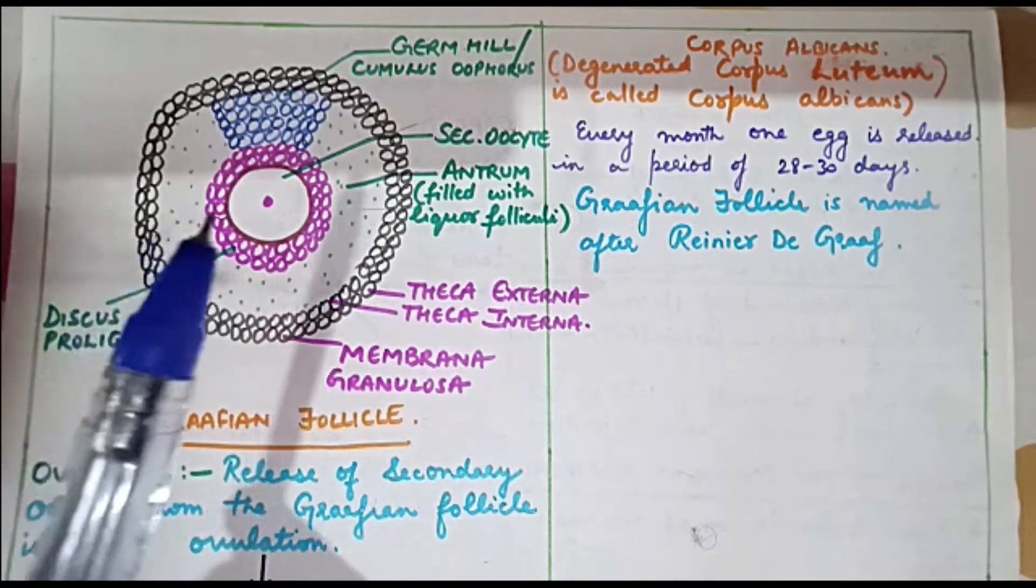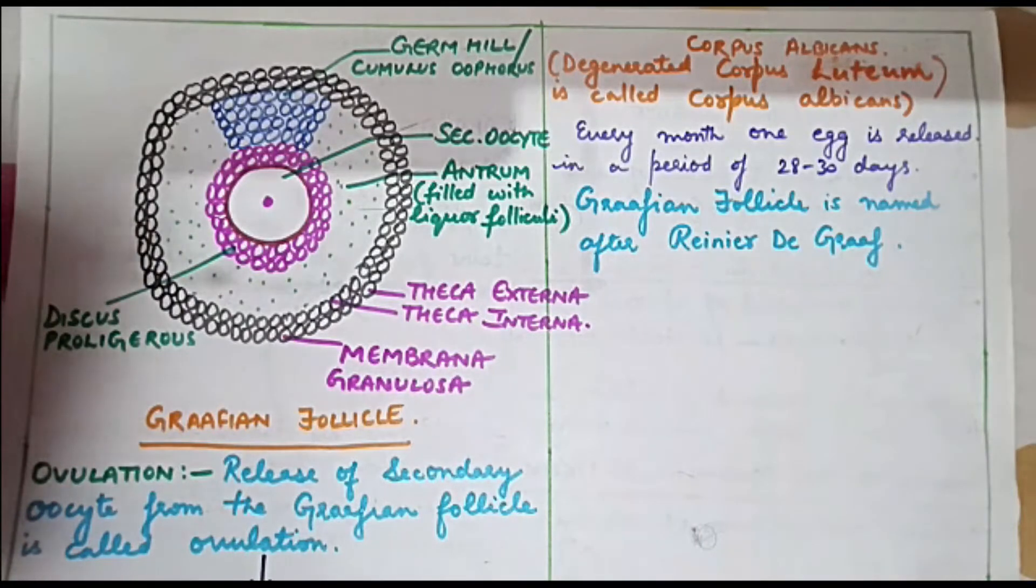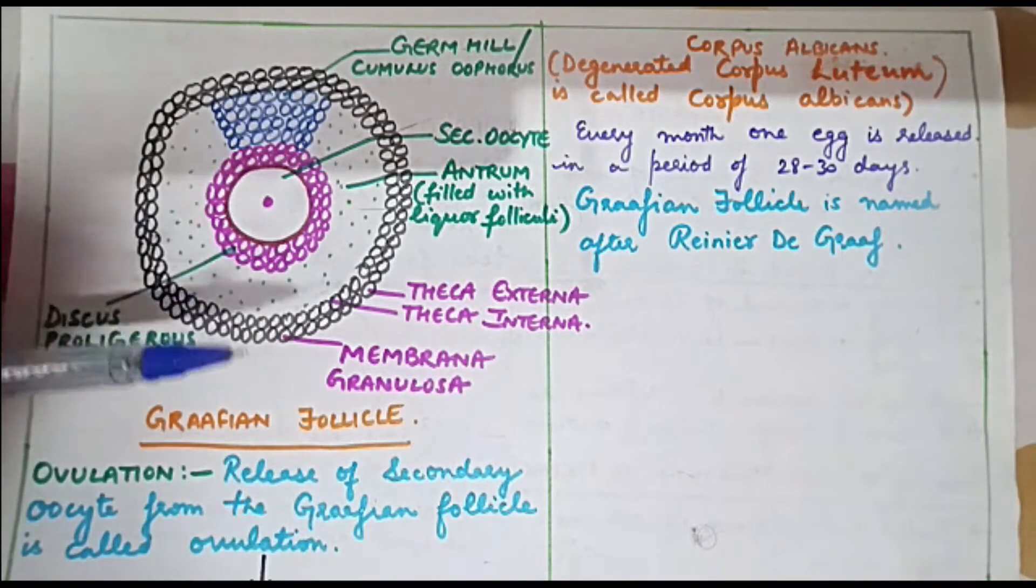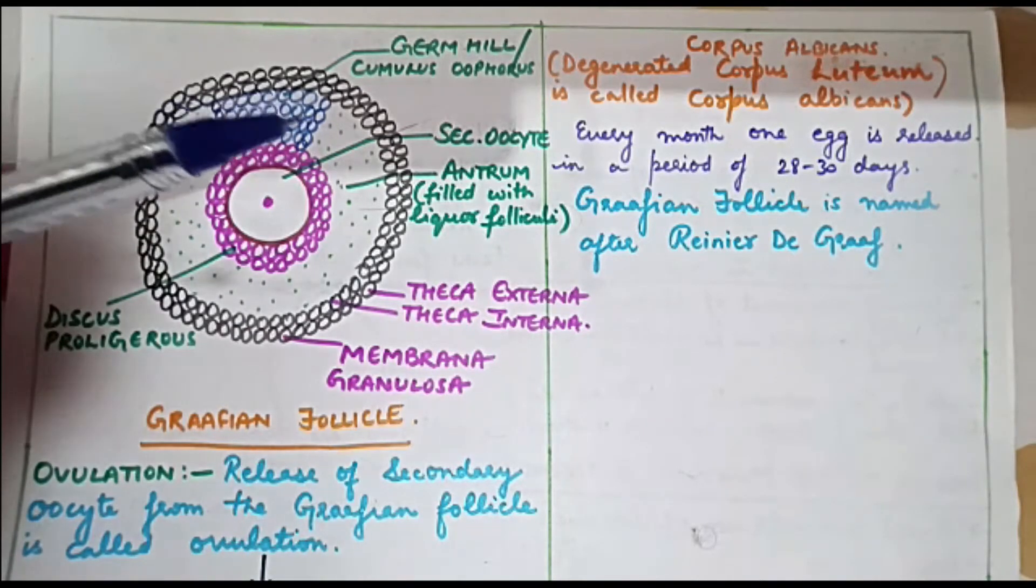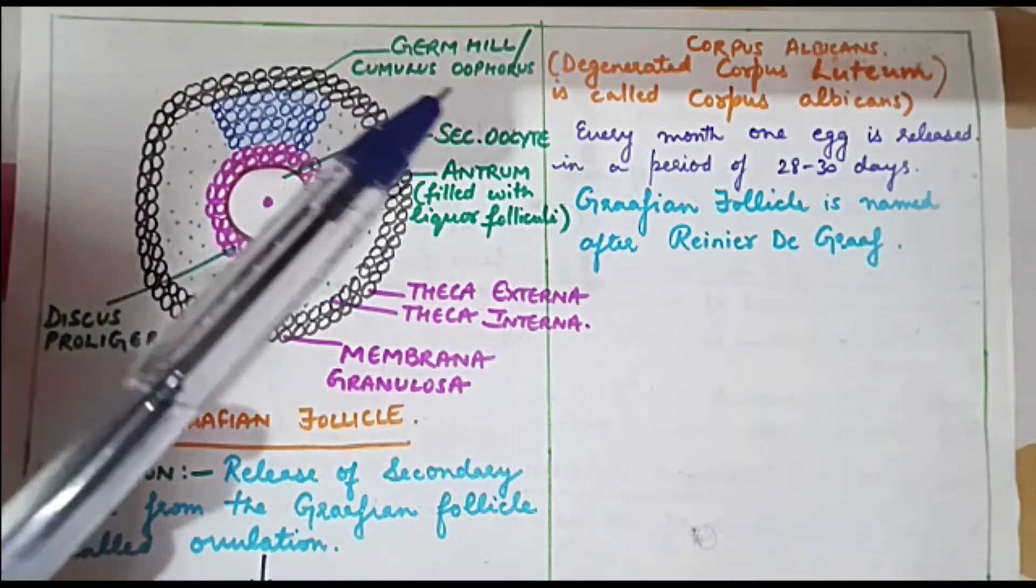Towards one end of the Graafian follicle we can see a layer of cells which form the germ hill or cumulus oophorus.